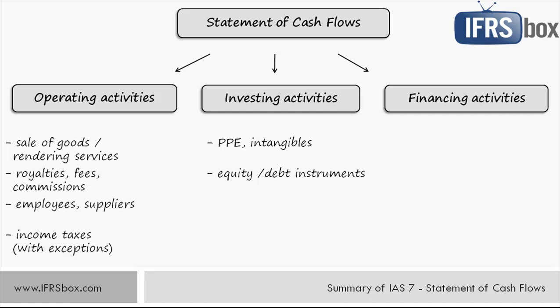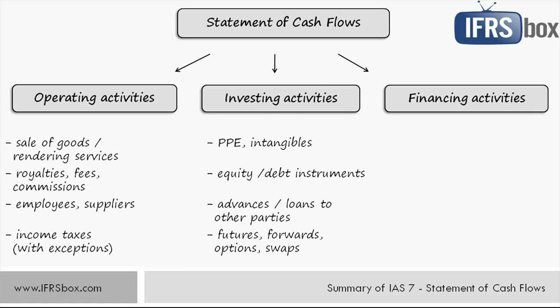Cash advances and loans made to other parties and receipts from their repayment belong to investing — but if you're a financing institution like a bank, this goes to operating activities. Cash payments and receipts related to derivative contracts such as futures, forwards, options, and swaps belong to investing activities — but again, if those are held for trading, they are reported under operating activities. Be careful, because this also applies to some hedging relationships.